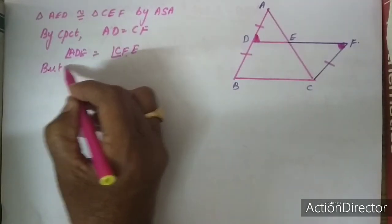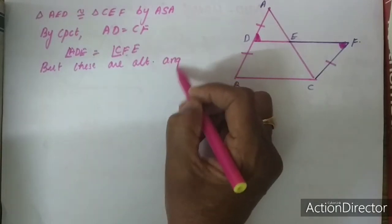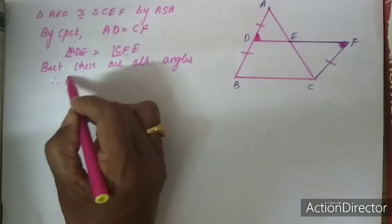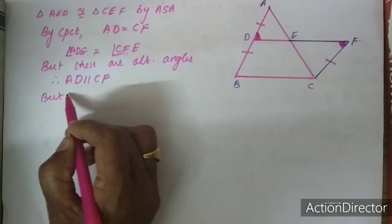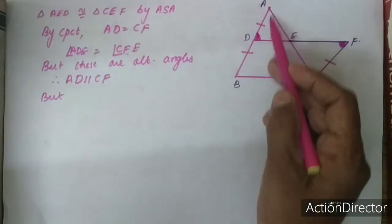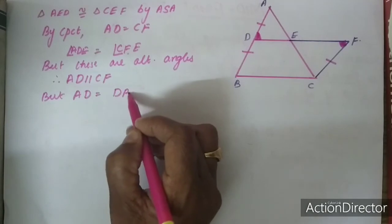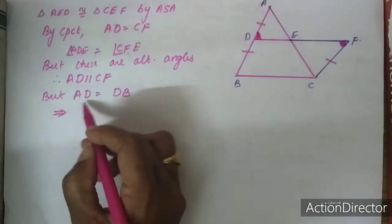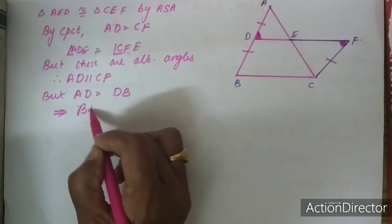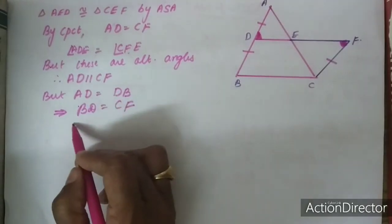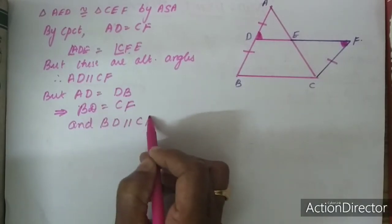Angle ADE is equal to angle CFE, but these are alternate angles, therefore AD is parallel to CF. Since D is the midpoint of AB, AD is equal to DB, which implies BD is equal to CF and BD is parallel to CF.